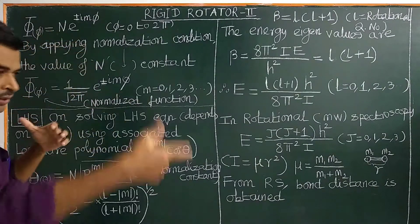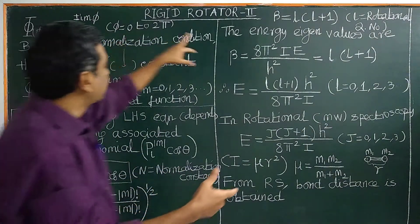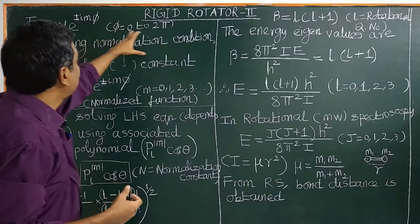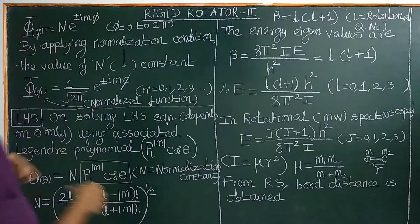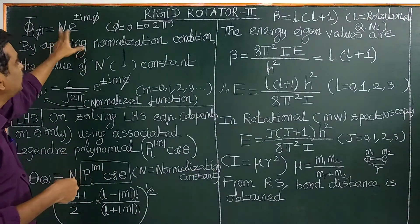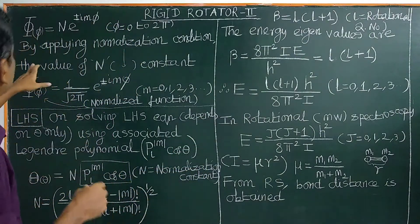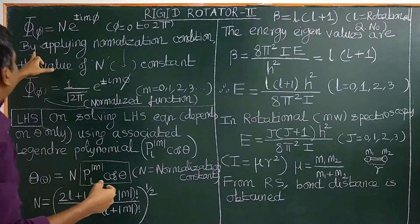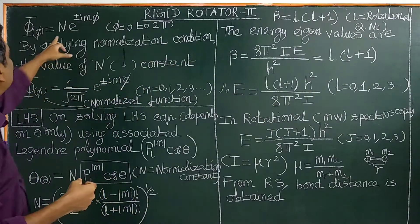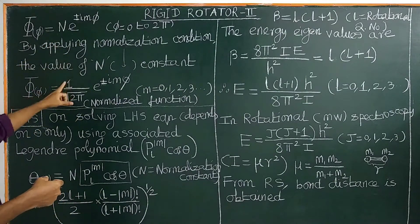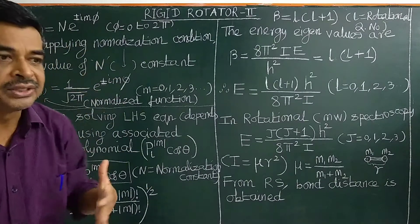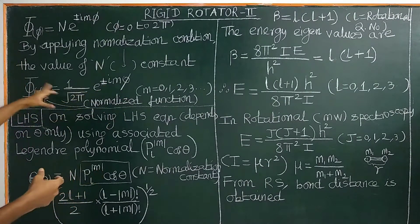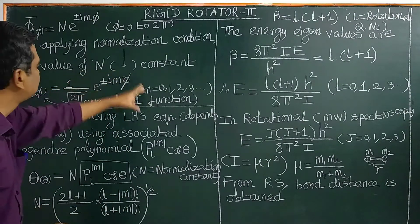On solving the right-hand side equation of the rigid rotator, capital Phi equals N times e to the power plus or minus i M phi. The value of phi ranges from 0 to 2 pi. N is called the normalization constant. By applying the normalization condition, the normalized wave function phi is obtained.